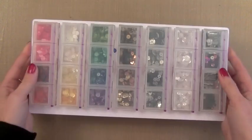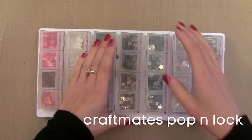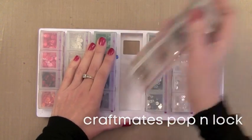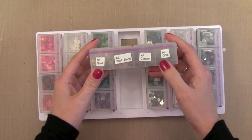Now the other Craftmates that I use is this one that's larger but the containers are smaller. This has 28 spots in it. This is perfect for your sequins or any kind of smaller embellishments. So a little unit of four pops right out.